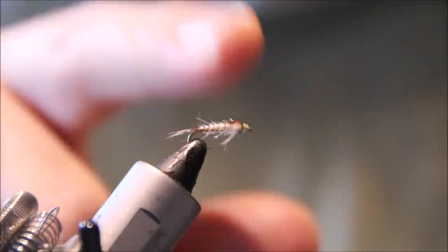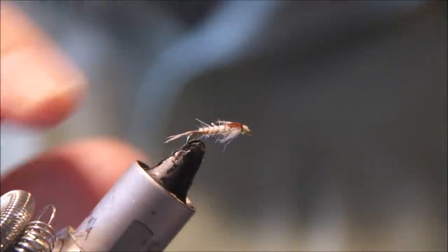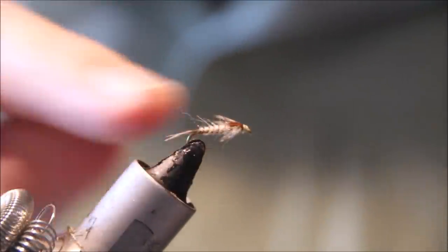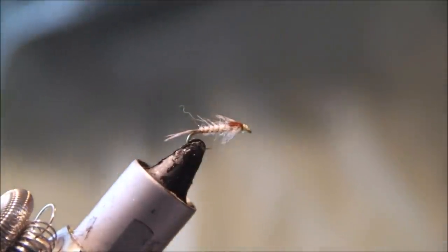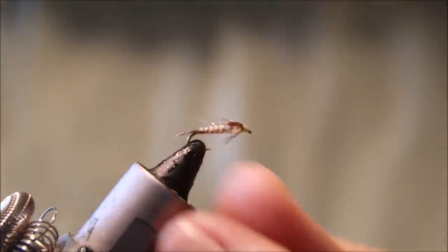If you wish, you can darken the back with a marker, but I generally don't. As I say, tie them in olives, browns, pale yellows, different sizes - whatever suits your fishing.